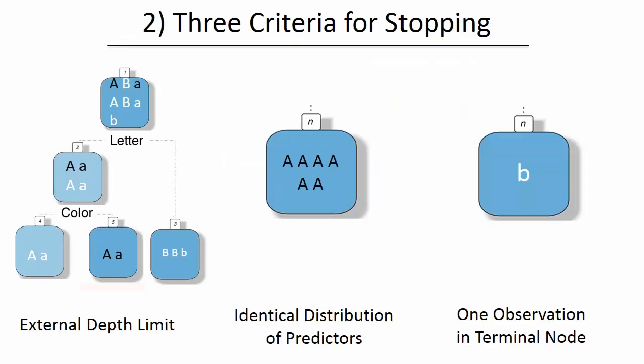From each of these child nodes, this process continues for each successive child node until stopping. Since the tree building process cannot continue indefinitely, we must impose three stopping criteria. First, we can impose an external depth limit that specifies a certain number of partitions of the set. In the example below, we have set a limit of two. Notice that after the first two partitions, we could still split the variables by case, but this would exceed our depth restriction.